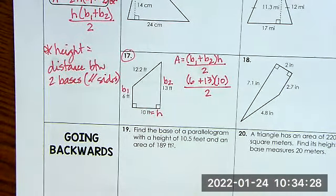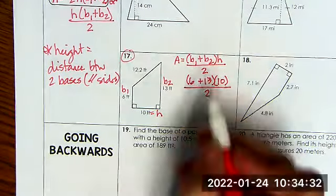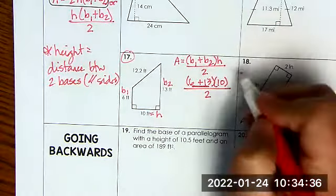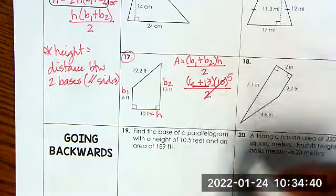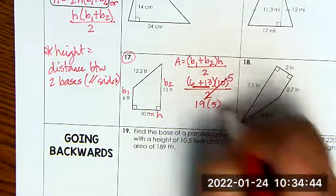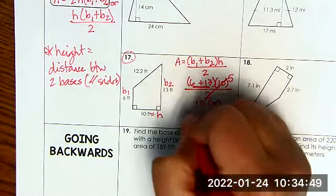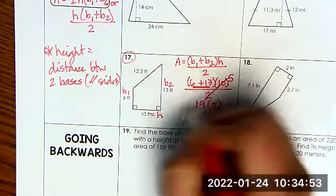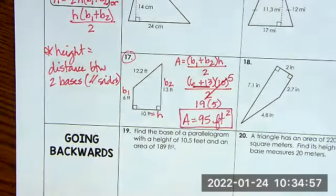Now what I can see right here is I can do multiple things at one step. I can do the six plus 13, but I can also do 10 divided by two, which is five, which then that's going to give me 19 times five, which equals 95 feet squared.